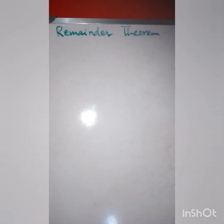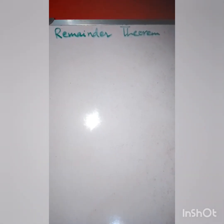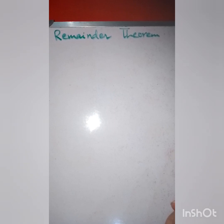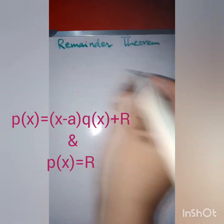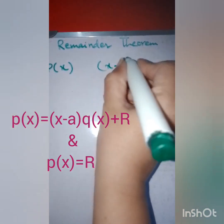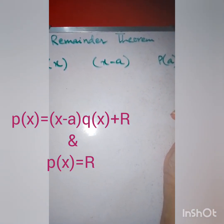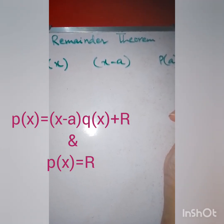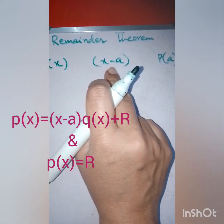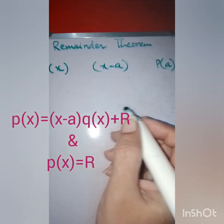Assalamu alaikum. Continuing with the next exercise of the same chapter on factorization, here we are going to discuss the remainder theorem and the factor theorem. The remainder theorem states that when a polynomial p(x) is divided by a linear polynomial x minus a, then the remainder is equal to p(a). This basically enables us to calculate the remainder of the division of any polynomial by a linear polynomial without actually carrying out long division.